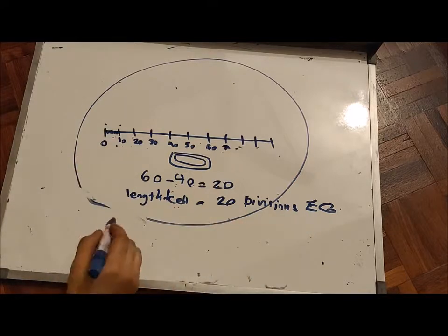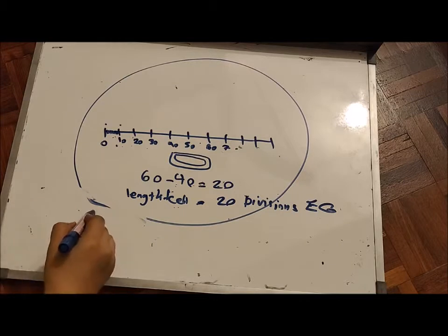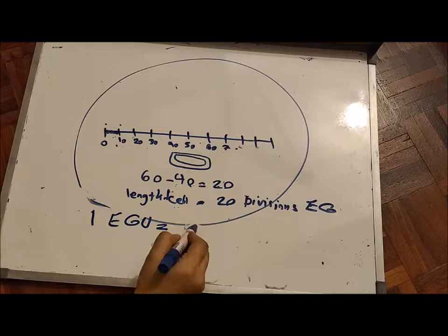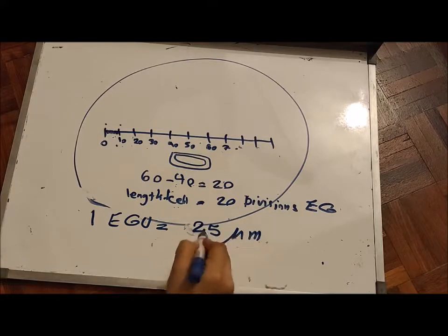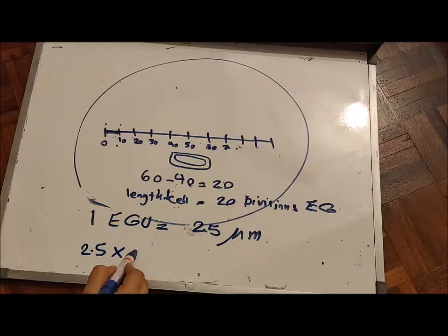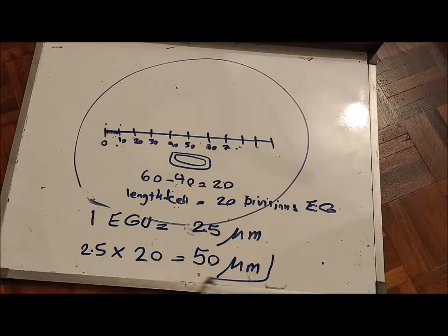If they give you the value for each division — for example, each one eyepiece graticule unit equals 2.5 micrometers — then you can easily calculate: 2.5 times 20 equals 50 micrometers. So 50 micrometers is the real size or the length of the cell. But if you don't have this value, you have to find it out by using the stage micrometer.